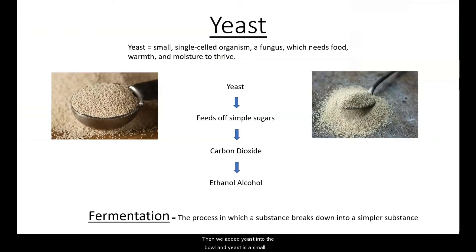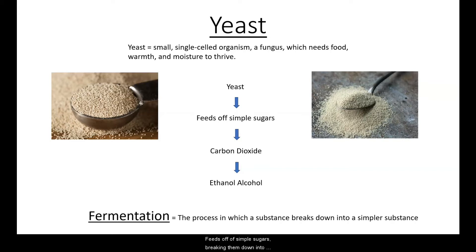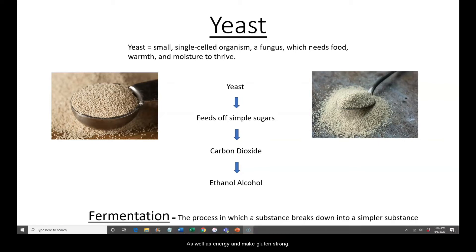Then we added yeast into the bowl. Yeast is a small single-cell organism — a fungus. It's alive, kind of like fruit is alive. It needs food, warmth, and moisture to thrive. Yeast feeds off of simple sugars, breaking them down into carbon dioxide, ethanol alcohol, as well as energy, and it makes the gluten strong.